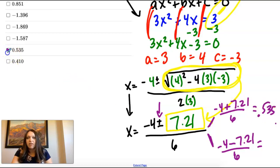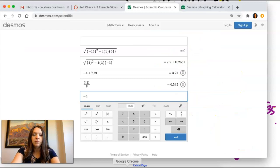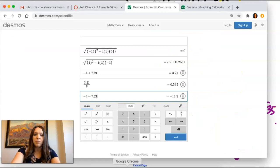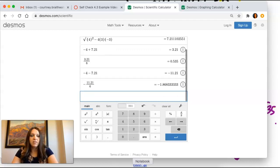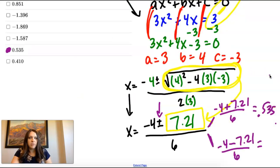So I can see that right there. And then negative 4 minus 7.21. And I'm going to take that answer and divide it by 6. So negative 1.868. It would be 6.9 when I round. You can see it right here.